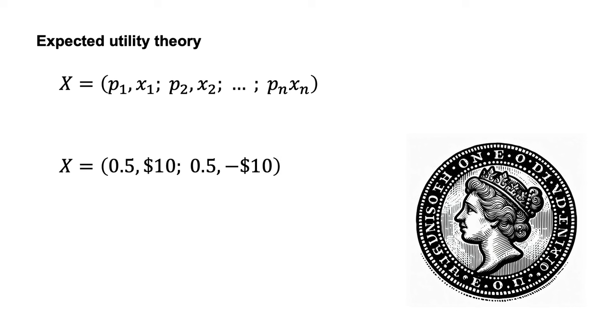For example, the prospect might be a coin flip that delivers a win of $10 for heads and a loss of $10 for tails. We would represent this prospect as 0.5, $10, 0.5, minus $10.